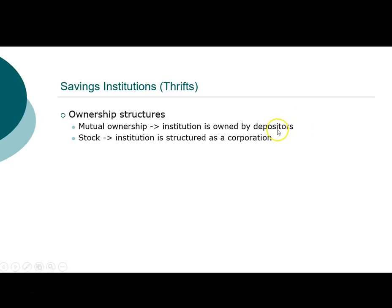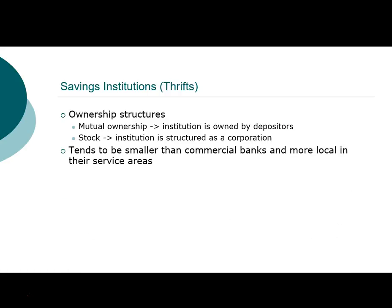What makes that unique is that the interest earned by the depositors is actually a function of the profitability of the institution. So when you join a savings institution that has a mutual ownership structure, you the depositor automatically become part owner of the institution. Because of that, they tend to be smaller than commercial banks and most of them are regional or very local. Since the depositors are also owners, they form a much stronger community and have a say in the operation of the savings institution by electing a board of directors.